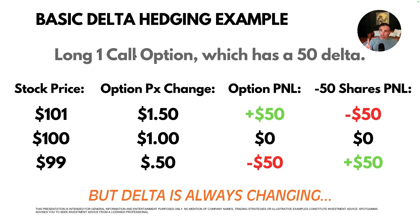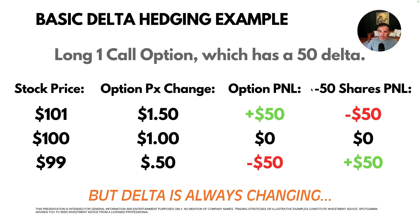In this Delta neutrality example, we are long one call option with a 50 Delta (also written as 0.50). If the stock is at 100 and goes up a dollar, your option makes 50 cents. Conversely, if the stock goes down a dollar, you lose 50 cents on your option. If you simultaneously short 50 shares of stock to hedge, your P&L becomes neutral — your option gains $50 but you lose $50 on the short shares. So you are P&L neutral from a change in underlying price.